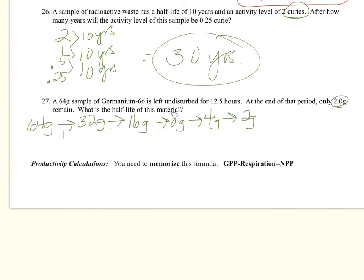So that's 1, 2, 3, 4, 5 half-lives. And it said that occurred in 12.5 hours. So we're going to take 12.5. We're going to divide it by 5 times. And when we do that math, we are going to find out that it's 2.5. And this is hours, not years. So be careful. 2.5 hours.